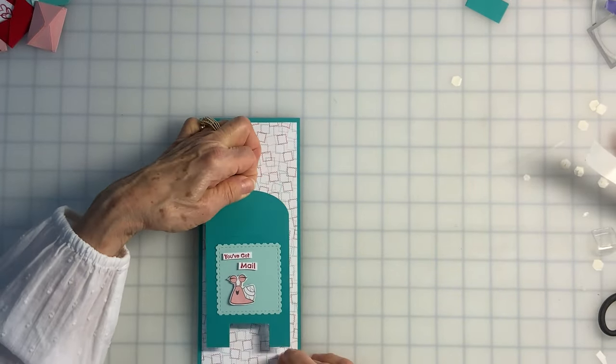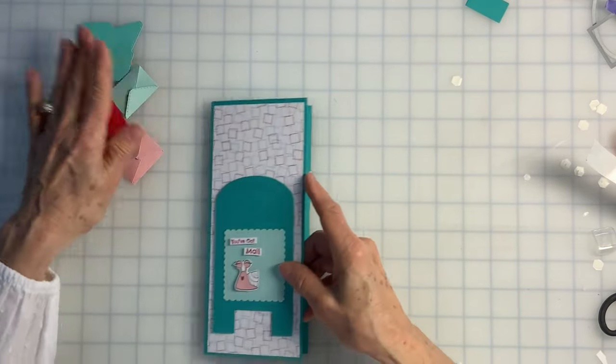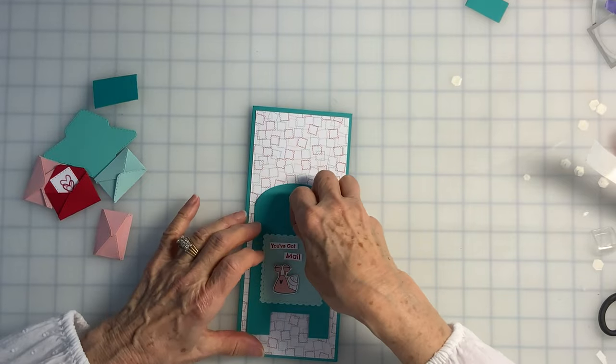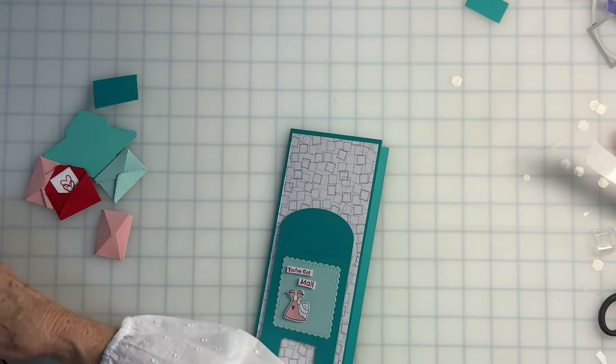Okay, I am going to place this down in about the center. And now I can add my envelopes. I'm going to get the catalog picture so I can make it look just like that.